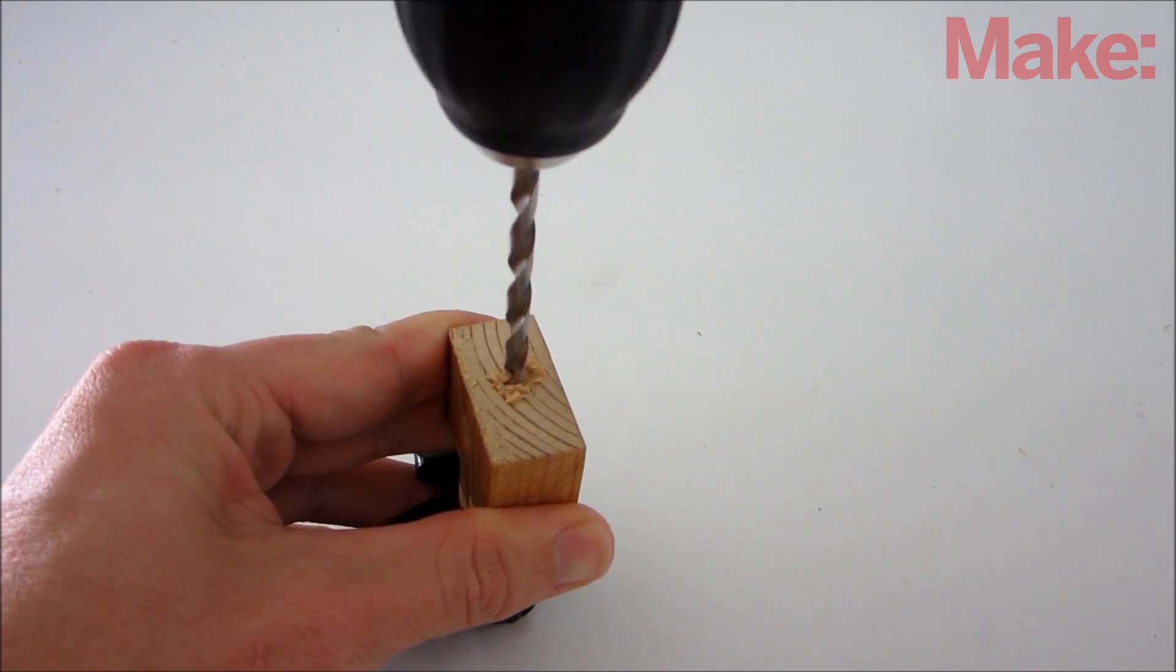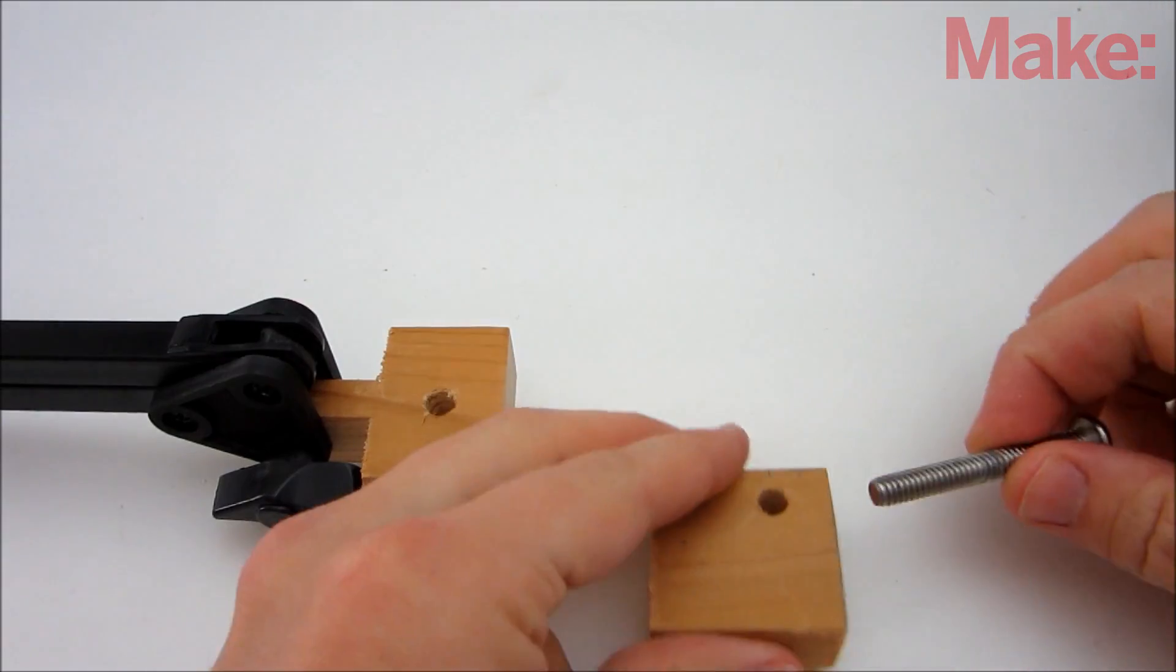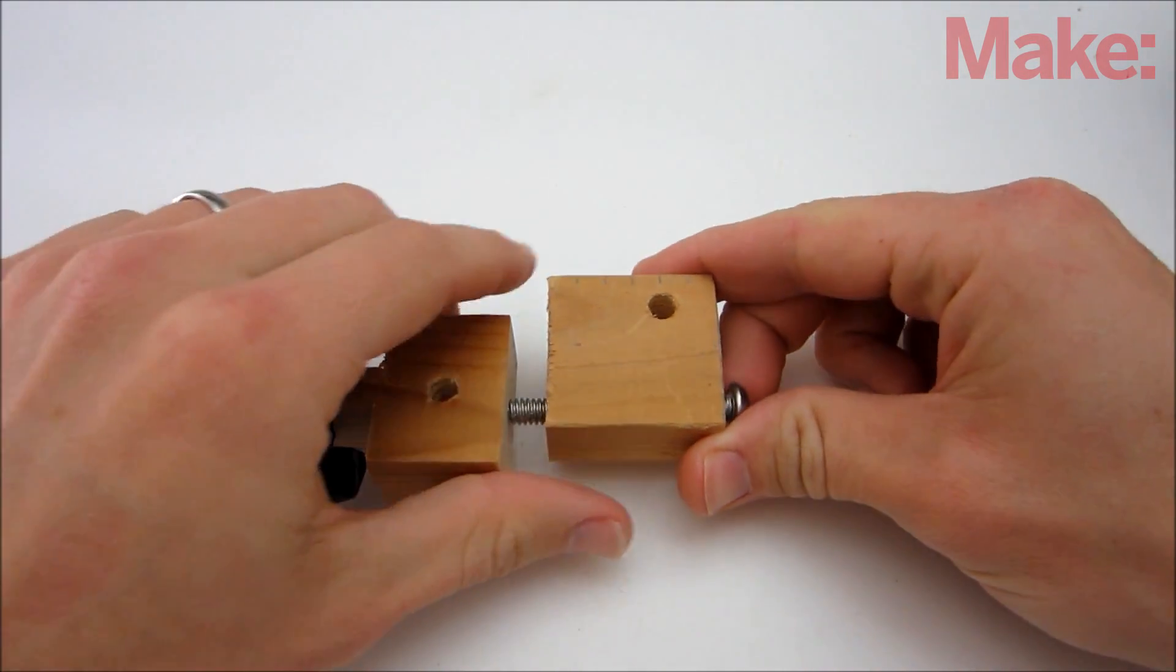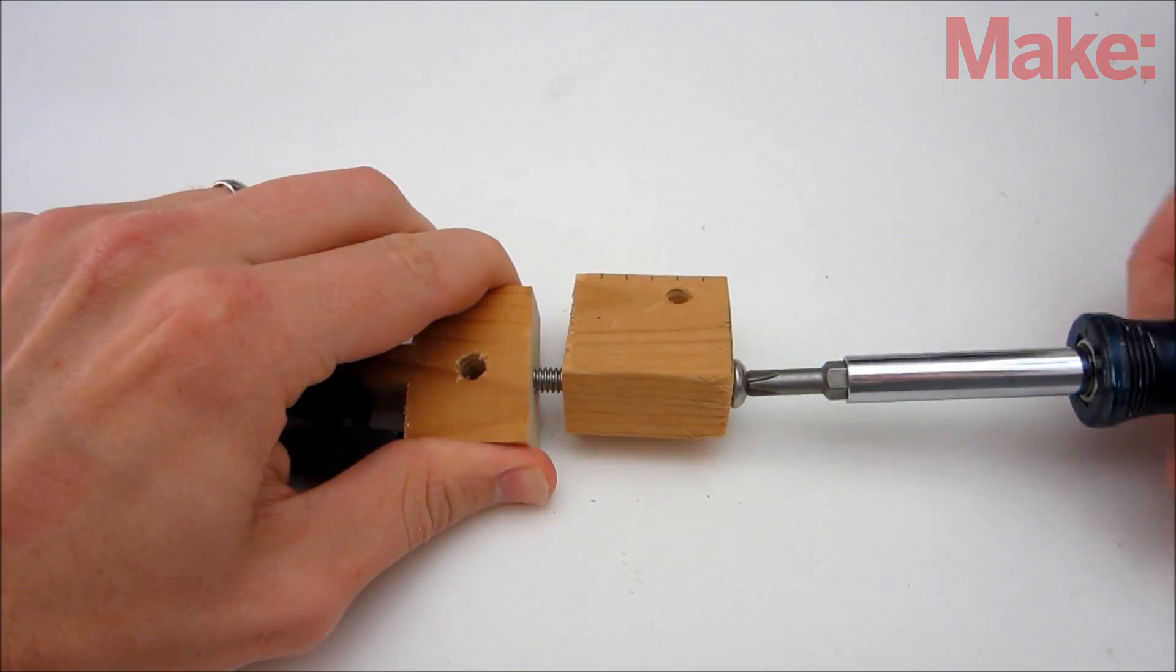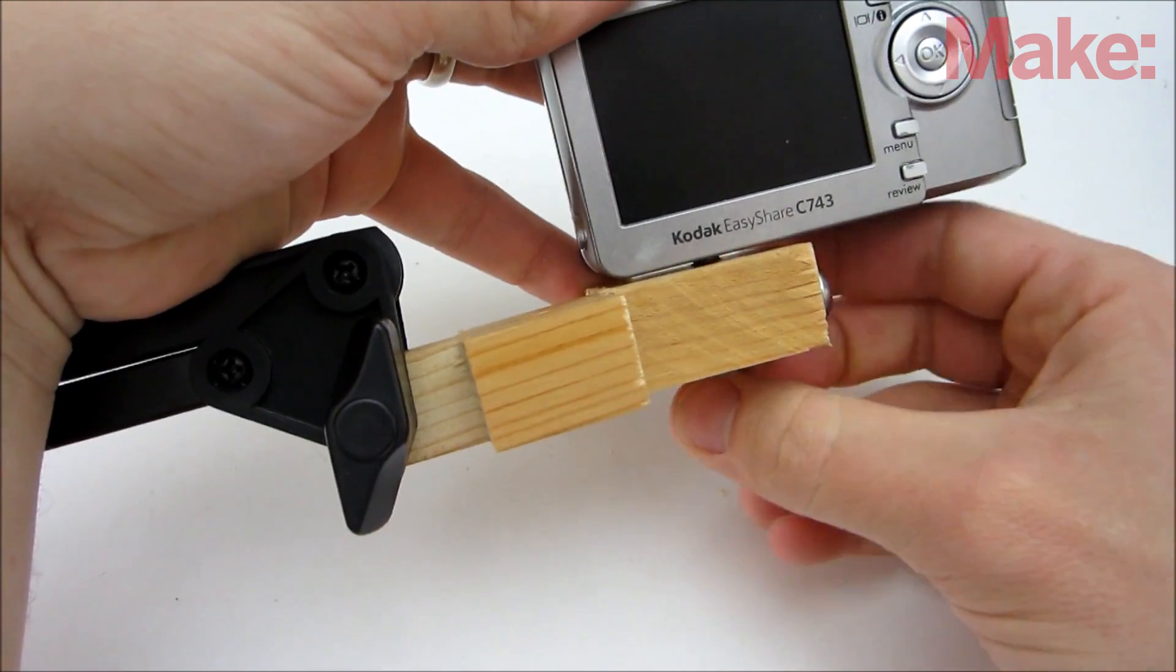Then take the first bracket and drill a 3/16 hole in the middle of the right side. To attach the two brackets together, insert a two inch long quarter inch bolt through the right side of the second bracket and slowly screw it into the hole that you just drilled in the side of the first bracket. Then screw on the camera as before.